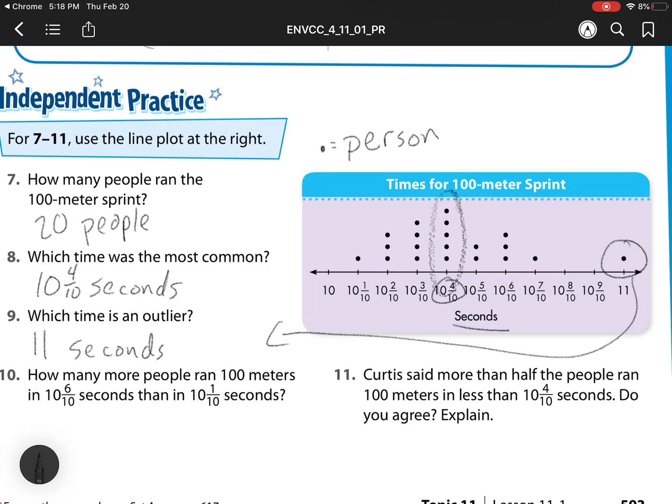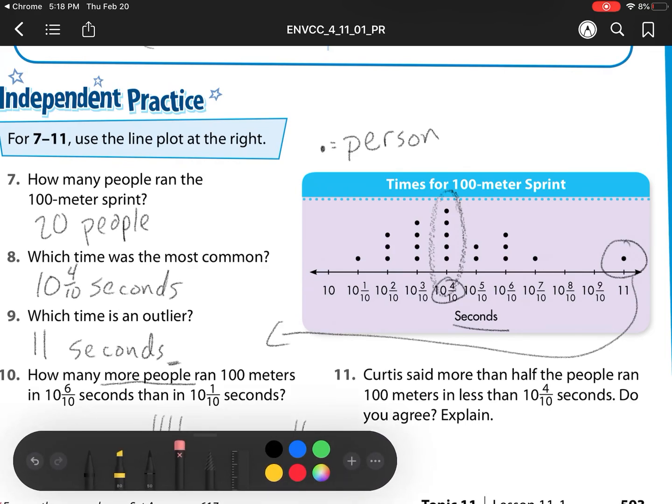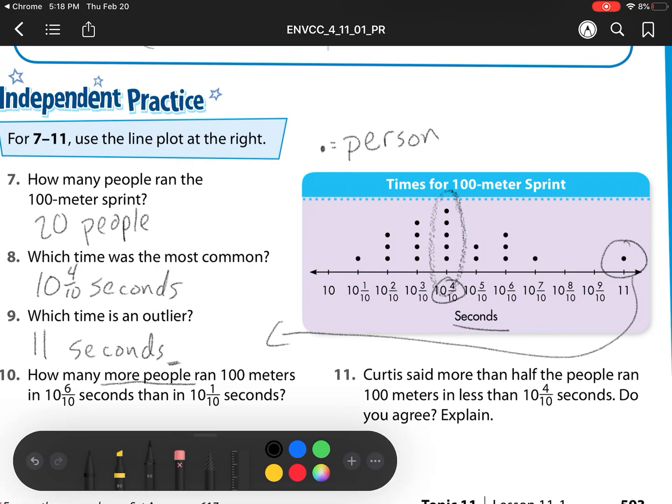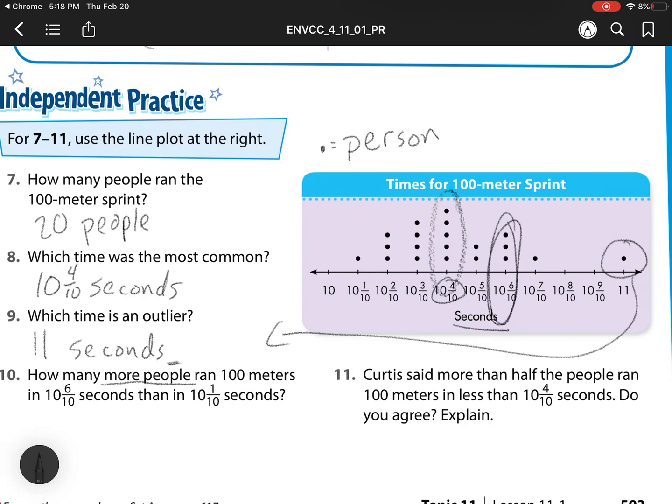Our next one says, how many more people? So that more people means to say subtraction. I'm comparing two things. Just like if I have four groups over here and two over here, if I said how many more, that would be 4 minus 2 is 2. Here, that how many more is a subtraction problem. So how many more people ran the 100 meters in 10 and 6 tenths than 10 and 1 tenths? Well, here I have a group of 3 minus a group of 1. So it's 2. So we have 2 people.